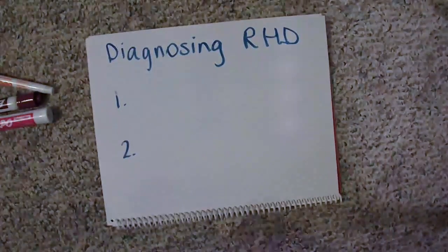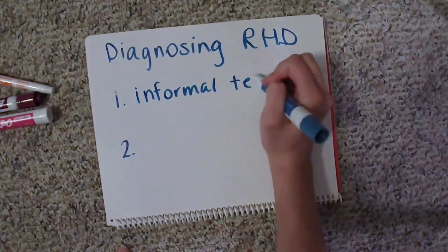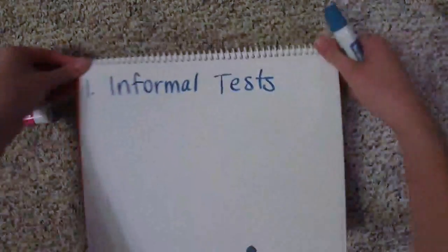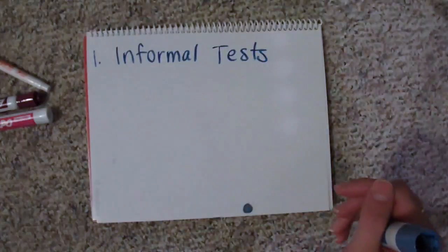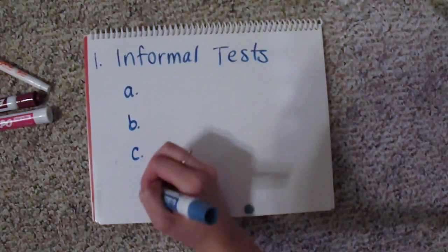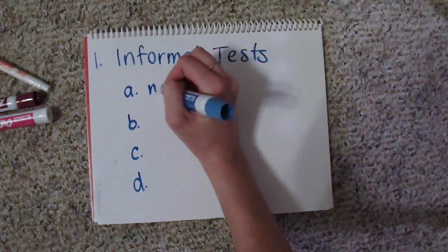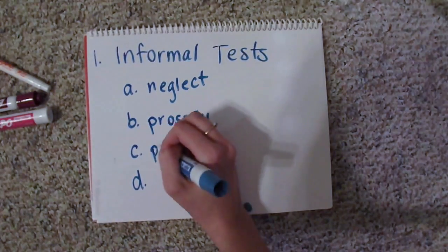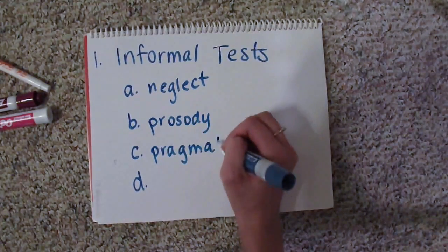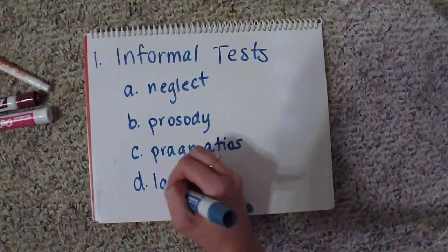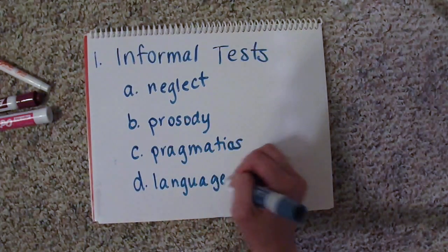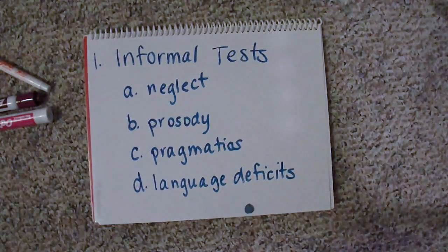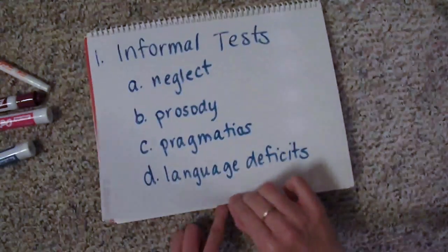We can use both formal and informal tests to diagnose the communication disorders associated with right hemisphere damage. Informal tests can be used to assess neglect by having the patient draw asymmetrical objects or perform various reading and writing tasks. Prosody by having the patient listen to sentences and produce a matching facial expression. Pragmatics by noting a patient's eye contact, turn taking, or topic maintenance skills. And language deficits by using various probing questions.